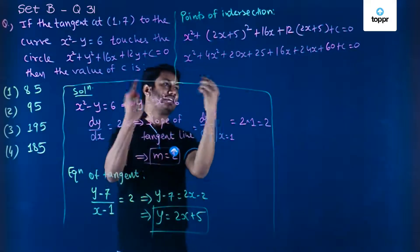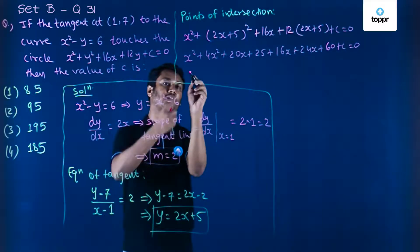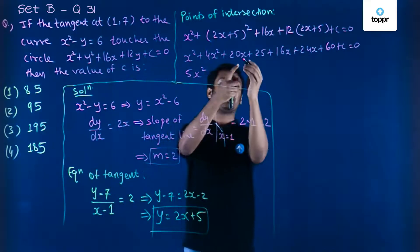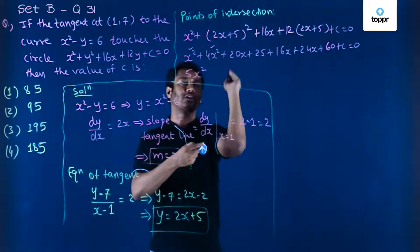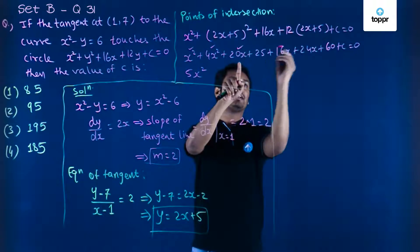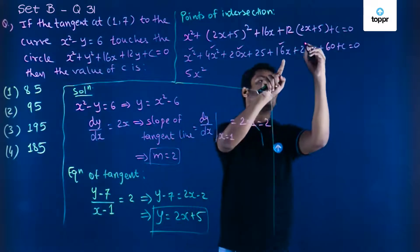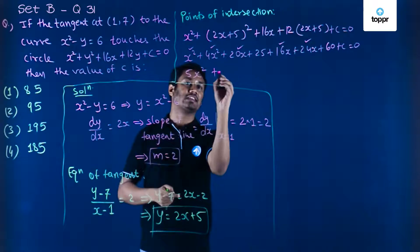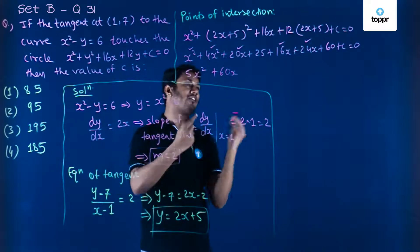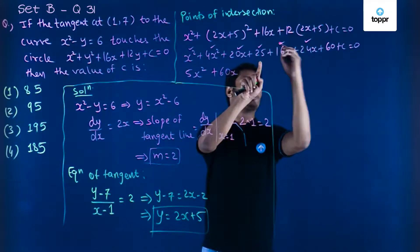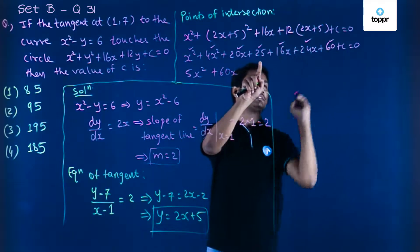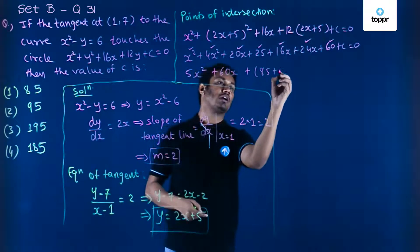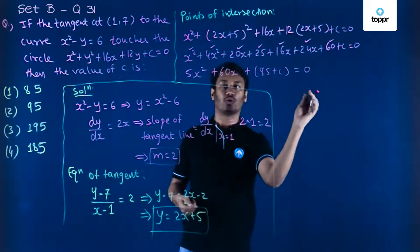Now let us combine all the x squared terms: 1 plus 4 gives 5x squared. Combining all x terms: 20 plus 16 is 36, plus 24 gives 60x. Combining all constants: 25 plus 60 gives 85 plus c. So the equation becomes 5x squared plus 60x plus 85 plus c equal to 0.